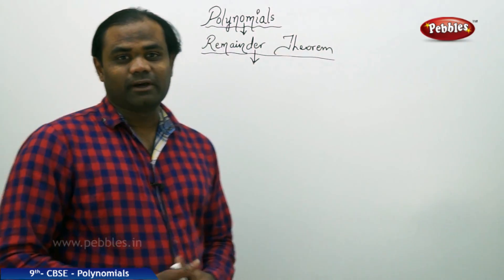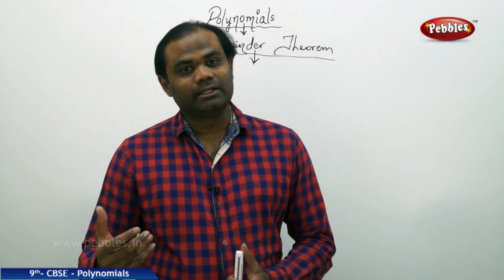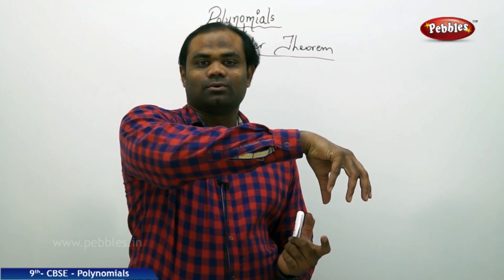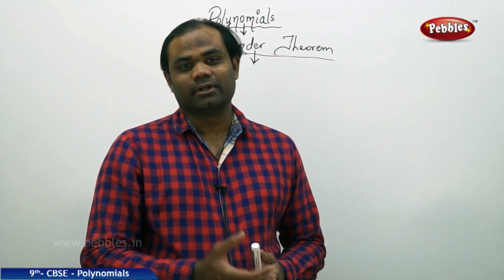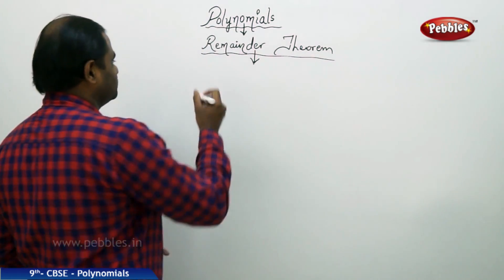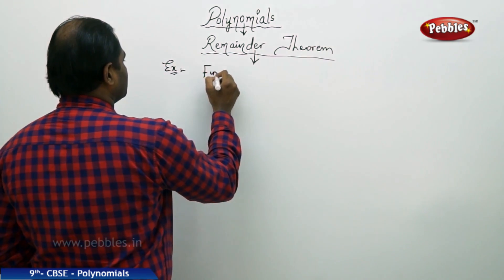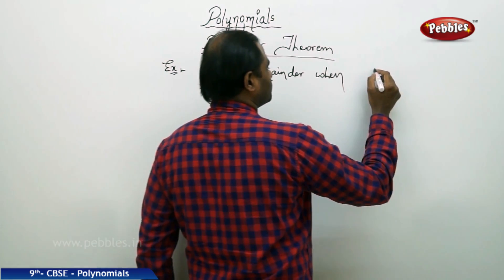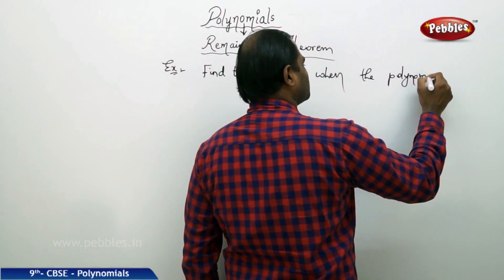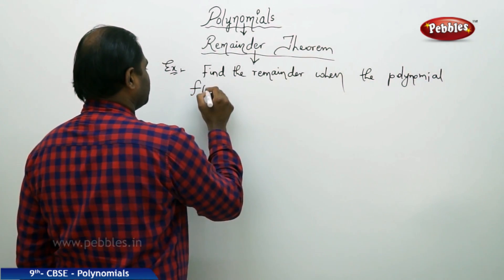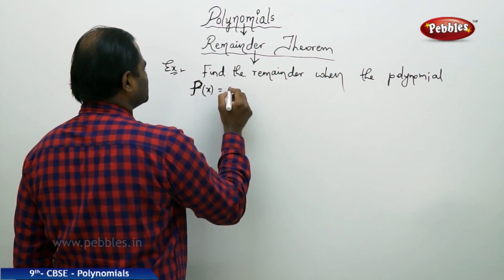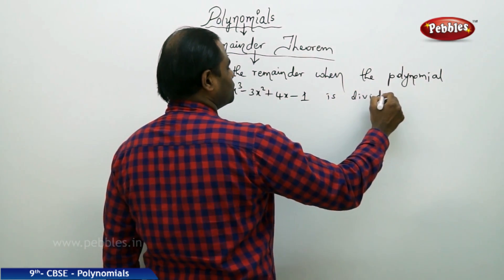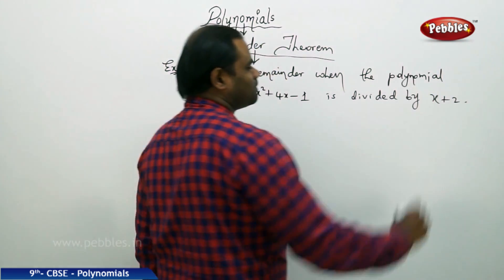Now let's see an example problem to understand the remainder theorem better and apply it in practice. We have already defined that for any polynomial divided by a linear polynomial, the remainder is directly connected to the factor of that linear polynomial. For example, the question says: find the remainder when the polynomial p(x) equals x³ minus 3x² plus 4x minus 1 is divided by x plus 2.